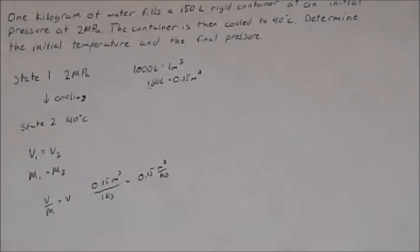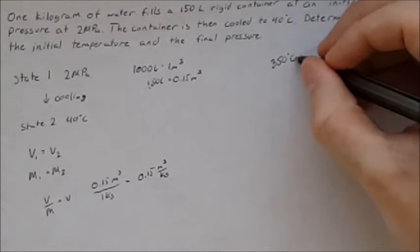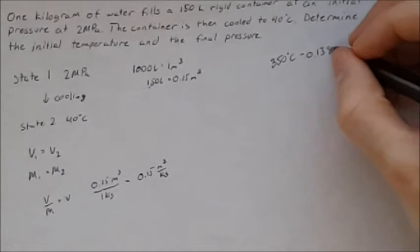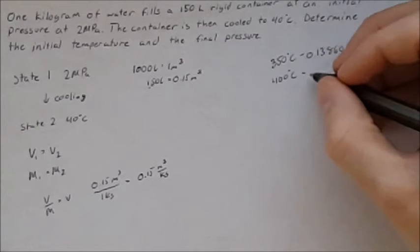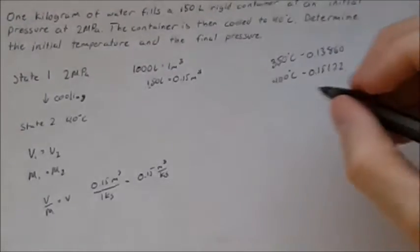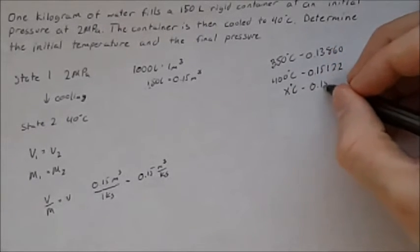We can assume the relationship between 350 degrees and 400 is linear so we can do something called linear interpolation to find out the exact temperature. So we know at 350 degrees Celsius we have 0.13860. We also know at 400 degrees Celsius we have 0.15122. We know at our unknown temperature degrees Celsius we have 0.15.